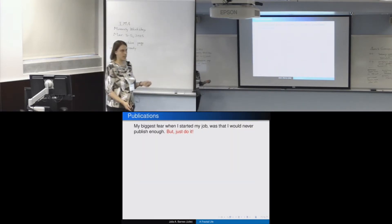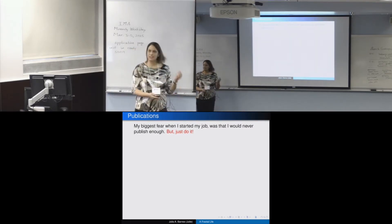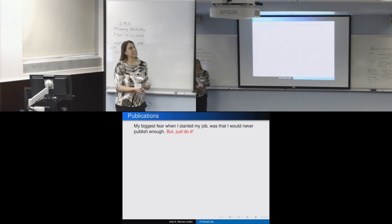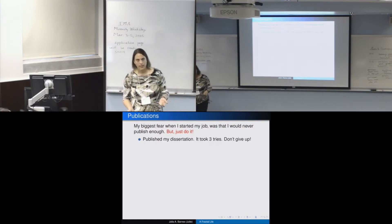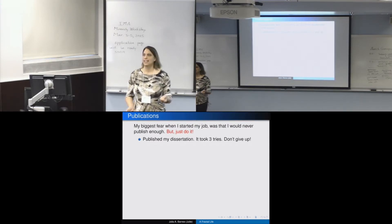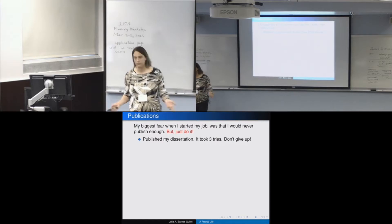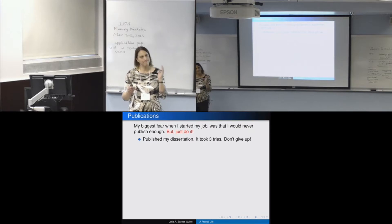But when I first started my job, my biggest fear was that publication thing. Like I'm never going to be able to publish. I was really down on myself. But the idea is just do it anyway. And the first thing you wanted to do was publish your dissertation. And in my case, it took three tries. And it wasn't because it was awful. It was because I sent them to the wrong journals. And once I sent it to the third journal, I had glowing referees reports. And I hadn't changed the paper. I just simply had sent it to the wrong place. So if that's happening to you, don't get down on yourself. Just, oh wait, what did I do here? Maybe it fits better over here.